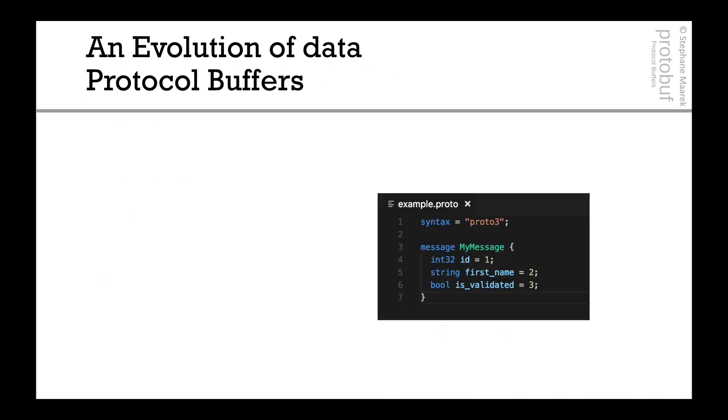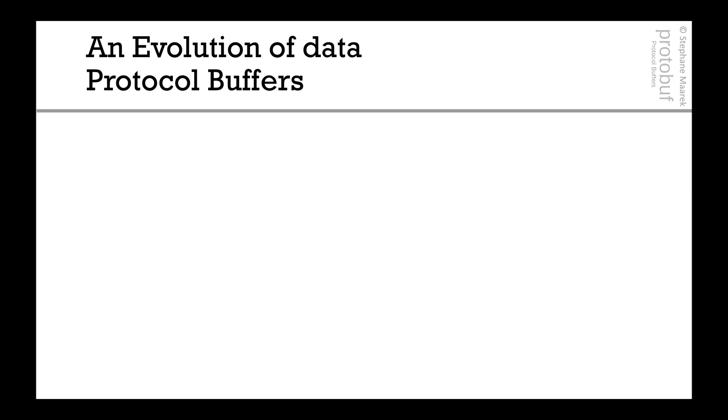Protocol buffers look like this. We have a syntax line and a message. It has a few fields: ID, first name, is validated. And you can read it right now. And it's super easy. The protocol buffers is defined by a .proto text file, such as the one you see right here. And you can read it and understand it as a human. I haven't taught you anything about this file yet, but it kind of makes sense to you already. You kind of know what's happening.